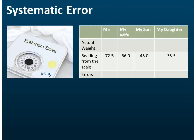Since the bathroom scale does not start from zero, if I get a reading of 72.5 kg, that is 0.5 kg extra, so my actual weight is 72.0 kg. Similarly, my wife's reading is not her actual weight — there is an extra 0.5 kg because the scale starts from 0.5 kg.